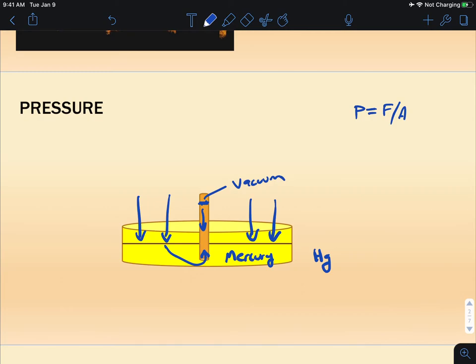Now if we're at sea level, if we were to measure that height at sea level, it'll be 760 millimeters of mercury. So it'll be 760 millimeters high.